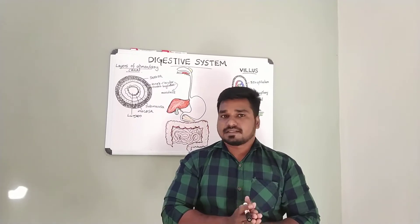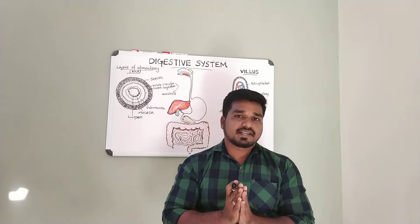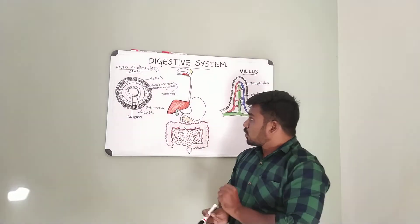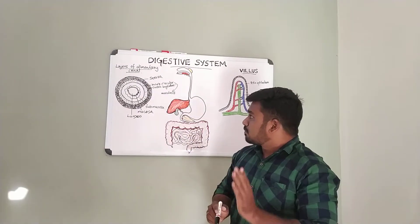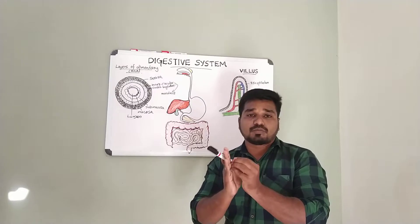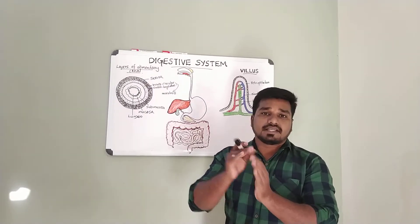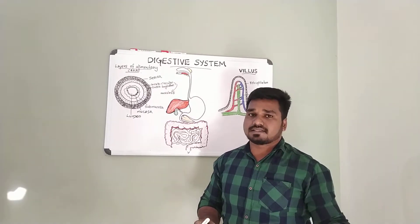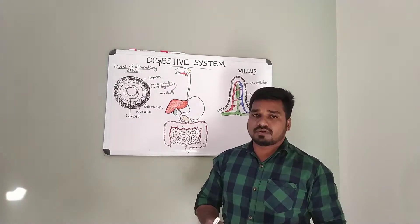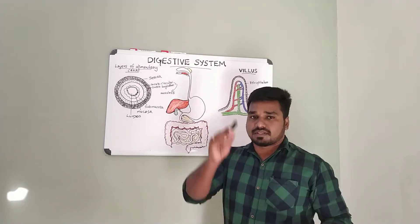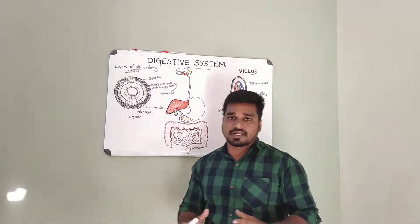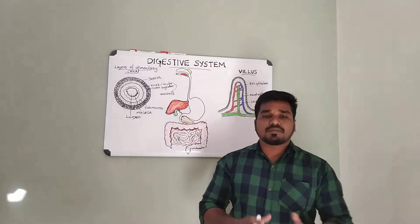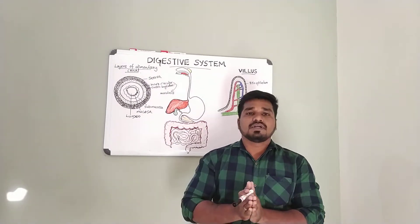The muscularis layer of the alimentary canal contains smooth muscle arranged in two main sublayers: an outer longitudinal muscle fiber layer and an inner circular muscle fiber layer. Especially in the stomach, there is a third layer — the oblique muscle fibers — arranged in a criss-crossed pattern, giving the stomach three types of muscle fibers for mechanical digestion.